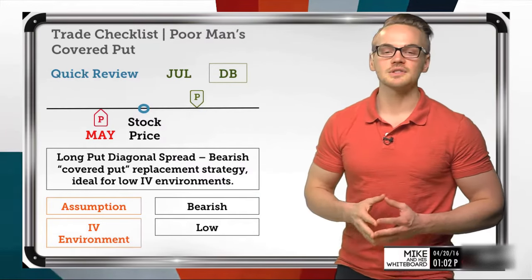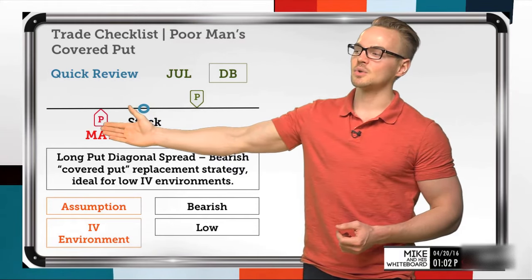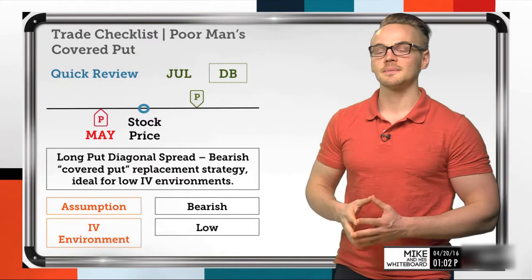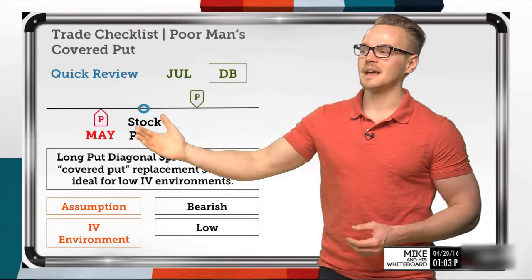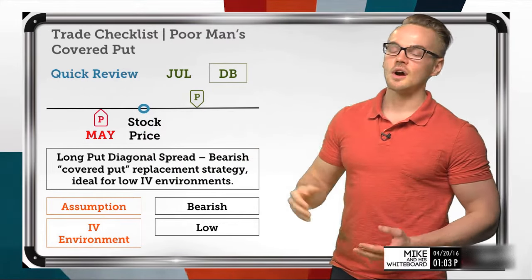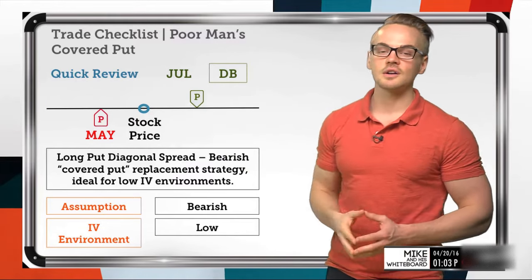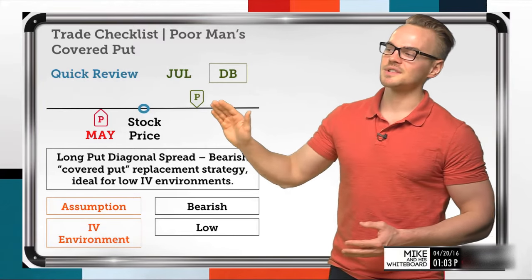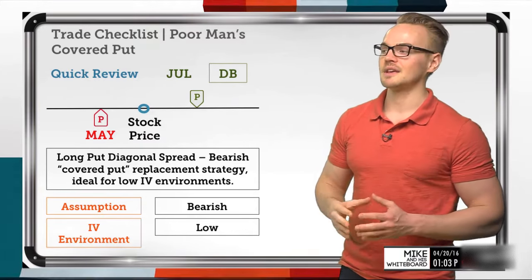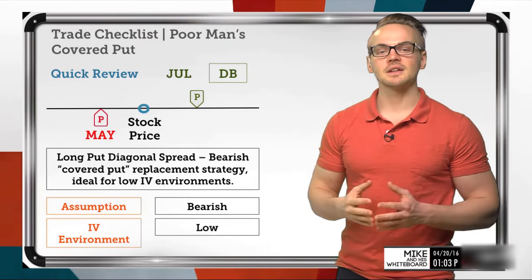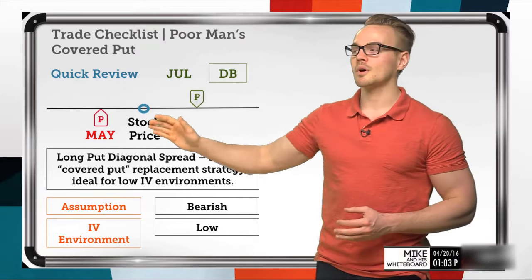My assumption when deploying this strategy is a bearish one — we want the long option to gain more value and we want the short option to ideally expire in May. Hopefully we can then deploy another short option in the next cycle to continually reduce the cost basis of our long July put. Because we're purchasing the long option in July and routing this trade for a debit, we want a low IV environment, since an expansion in implied volatility is going to increase the value of our July option much more than the value of our May option.